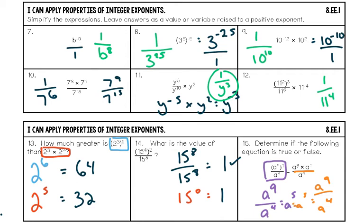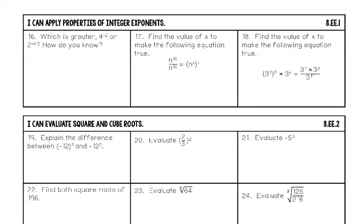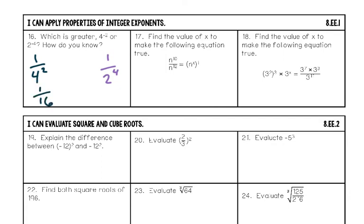Number sixteen: which is greater, 4 to the negative two or 2 to the negative four? Make everyone happy in the apartment: 4 to the negative two becomes one over 4 squared, which is one sixteenth. 2 to the negative four becomes one over 2 to the fourth, which is also one sixteenth. Neither is greater — they're both equal to one sixteenth.